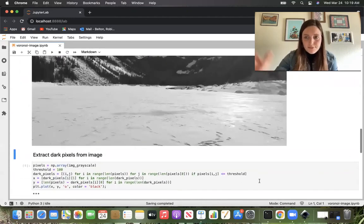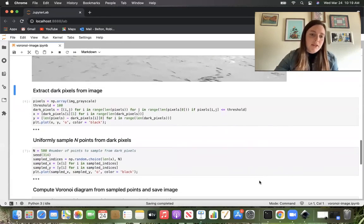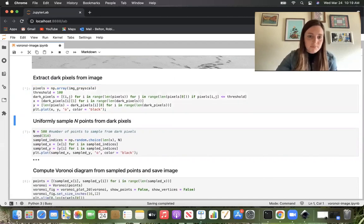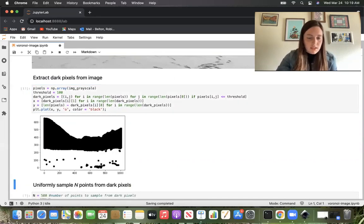So we need to get points from this image in order to compute a Voronoi diagram. And the way I'm going to do is I'm just going to extract the dark pixels from the image. I'm going to extract the pixels that are defining the mountainous landscape specifically. I've extracted those pixels and now here they are.